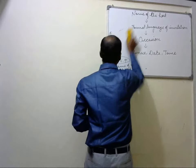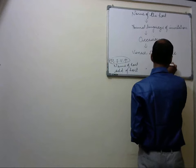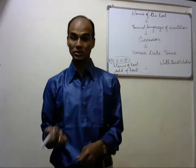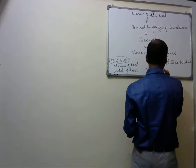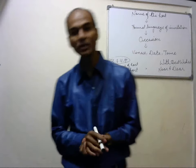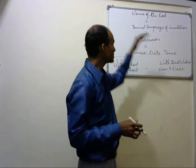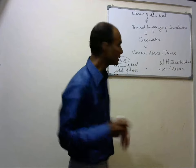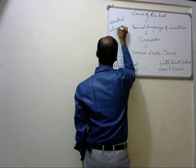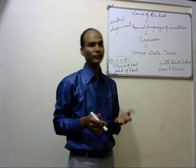On the right-hand side we write 'with best wishes' or 'with best compliments.' Below this we write 'near and dear' or 'friends and relatives' — either of the two can be written. This is the proper format. Along with this you must keep in mind that it should be centrally aligned. This is quite important in invitation; otherwise it won't look proper and you won't get full marks.